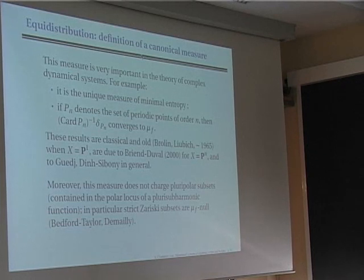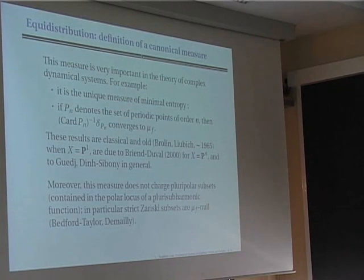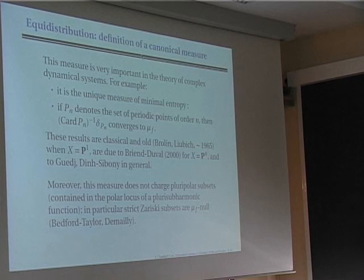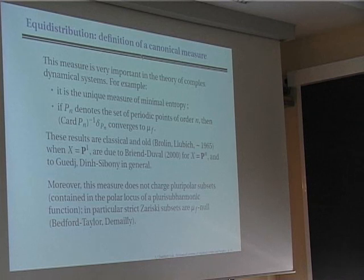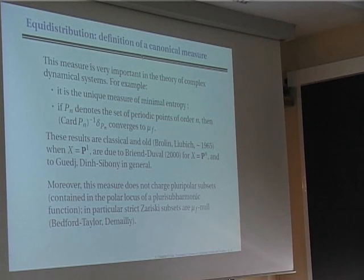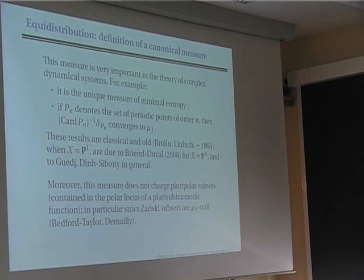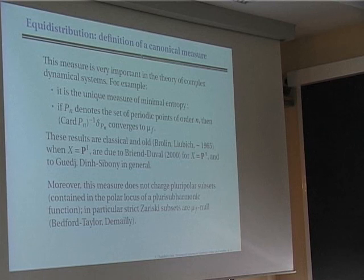For an abelian variety the measure you get is the Haar measure. For a toric variety — say P1 with map x ↦ x² — you get the integration measure on the circle, and more generally on the maximal compact subgroup of the torus. This measure is very important in complex dynamical systems: it is the unique measure of minimal entropy. Also, if you look at the points of period n, take the counting measure on that set divided by its cardinality, then this discrete measure converges to μ_f — an equidistribution theorem in complex dynamical systems, going back to Brolin and Lyubich in the 60s, and Briend-Duval and Dinh-Sibony more recently. Moreover, this measure does not charge strict Zariski subsets, implying the Zariski closure of the support of μ_f equals the whole variety.